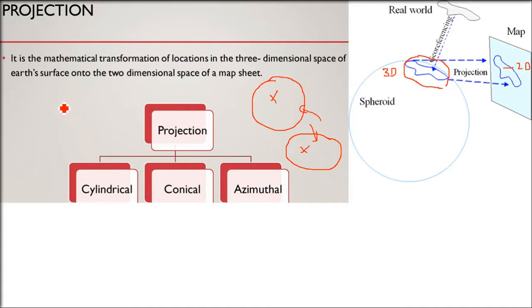Projection is a mathematical transformation of locations. If you are standing here and there's a moon or sun, you will have some shadow. So this shadow is the projection. It is ultimately the mathematical transformation of location in the 3D space of earth's surface onto two dimensional space of a map sheet. This is the definition of projection.